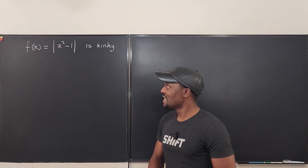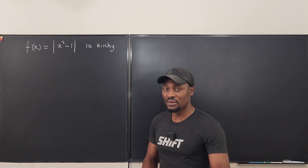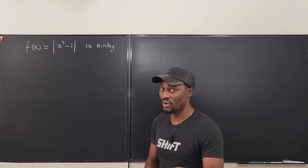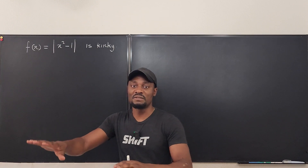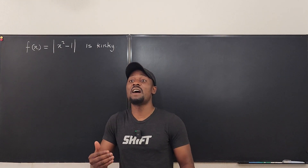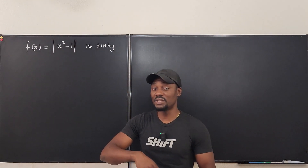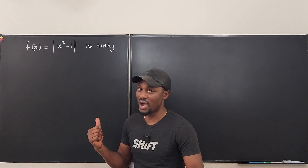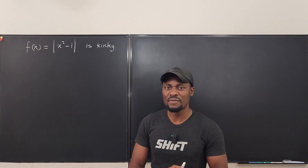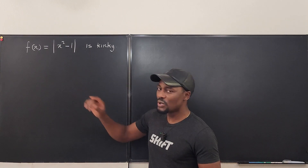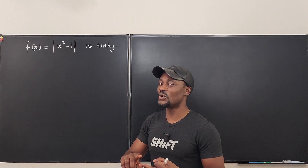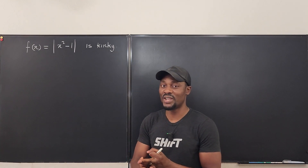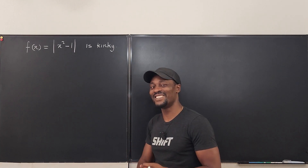When a function has a cusp or a kink, you cannot differentiate that function at that point — just at that point. It has a derivative everywhere else; it just does not have a derivative at that point because it's impossible to determine what the derivative is there. I'm going to show you algebraically, graphically, and analytically why a kinky function cannot be differentiated at the kinky point.